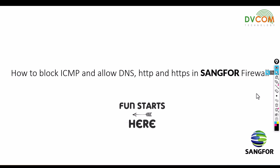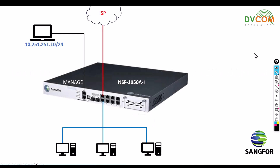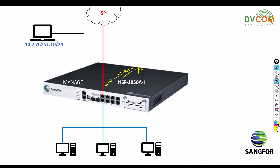Before we jump into the configuration, let's look at my lab topology. I have an NSF-1050 AI, which is the Sangfor firewall. I configured my WAN zone with IP address 192.168.254.50 /24, and for my LAN zone I configured 192.168.100.1. I enabled DHCP, and through DHCP I got the IP address 192.168.100.51.